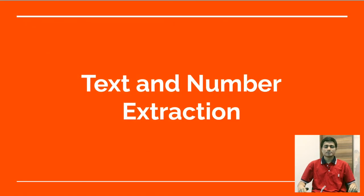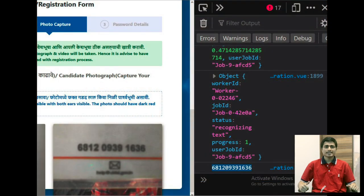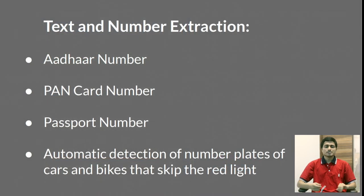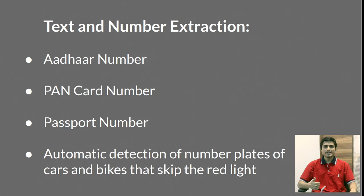Text and Number Detection. Our program detects the text in E-Governance inside a photo when the applicant holds his document in front of the webcam. In this way, we can extract the Aadhaar number, PAN card number, as well as passport details of the applicant. This is useful in E-Verification of the candidate's identity.